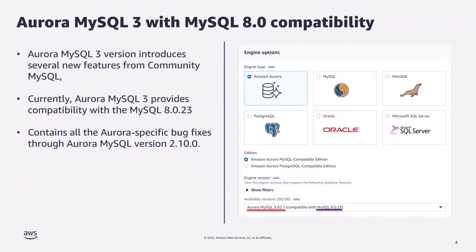So what does this compatibility with MySQL mean? Aurora MySQL 3 introduces a plethora of new features, both inherited from Community MySQL 8.0 and features that are native to Amazon Aurora. These features include common table expressions, role-based authentication, instant DDL, and a lot more. We will dive deep into these individual features in upcoming slides.